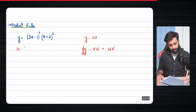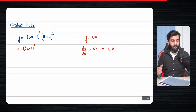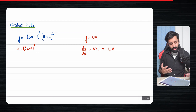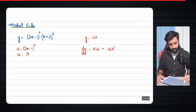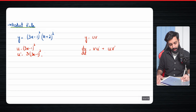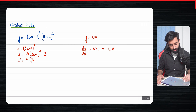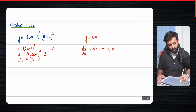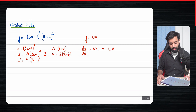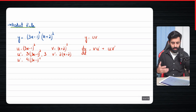Now let's apply this to our question. It's a good idea to first write down u and v, and be as systematic and neat as possible. So u prime, using the chain rule, gives three multiplied by (3x - 1) squared, then multiplied by the differential of (3x - 1) which is three, simplifying to 9(3x - 1)². Then v is (x + 2)², so v prime is 2(x + 2) to the power of one, which you can expand to 2x + 4.